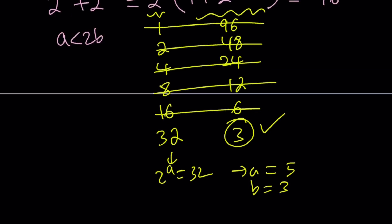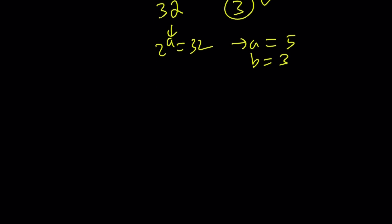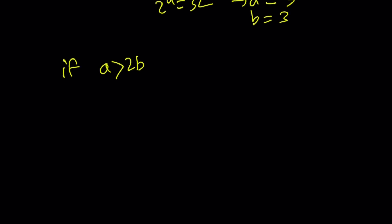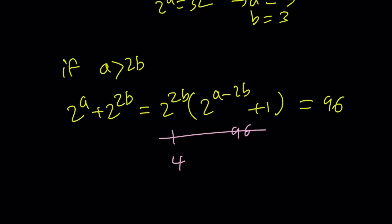But you should also consider the other case. What happens, what if a is greater than 2b? Then you're going to get something like this. 2b is going to be the smaller power. So you can take out 2b. That's going to give you 2 to the power of a minus 2b plus 1 equals 96. But when you look at the choices the same way, you're going to notice none of them work. For example, if this is 1, this is 96. You can't use a 2 because that would indicate b equals 1 half.